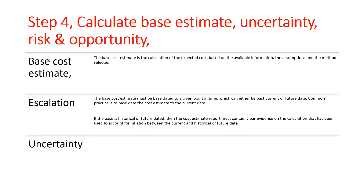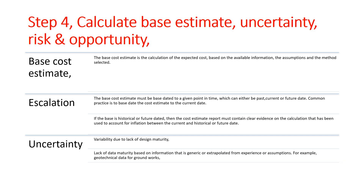Uncertainty is driven by three factors. Variability: variability due to lack of design maturity or lack of data maturity based on information that is generic or extrapolated from experience or assumptions — for example, geotechnical data for groundworks. Bias or Error: conscious or unconscious assumptions that lean towards values that are not accurate.